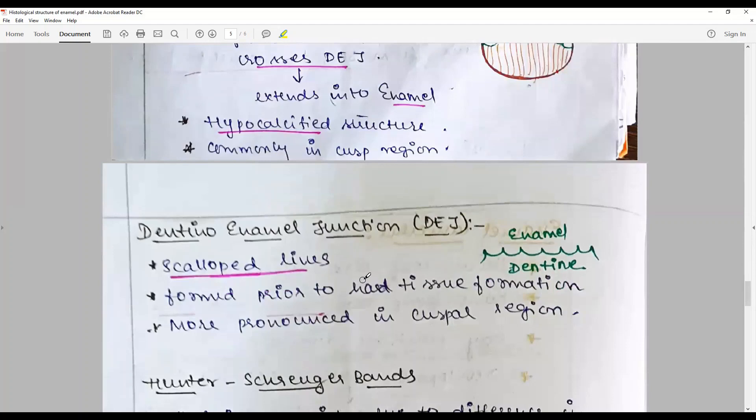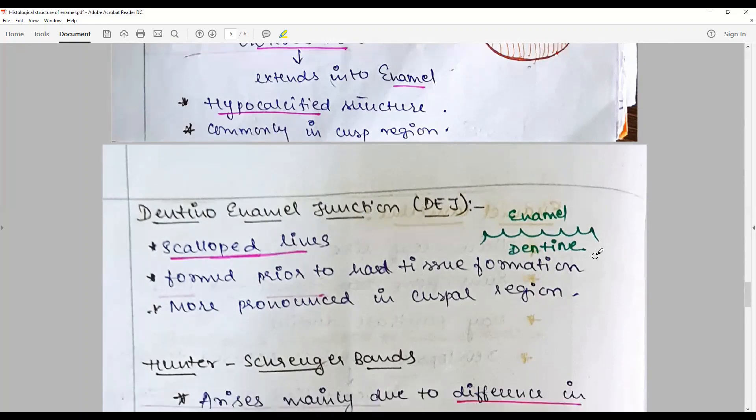Dentino-enamel junctions are scalloped like with a concavity facing the enamel and convexity facing toward the dentin. They are not a single line entity and spread throughout. They differentiate between enamel and dentin. They are formed prior to the hard tissue formation, both on odontoblast and subsequent ameloblast secretions. They are more pronounced in cuspal regions. They are scalloped.